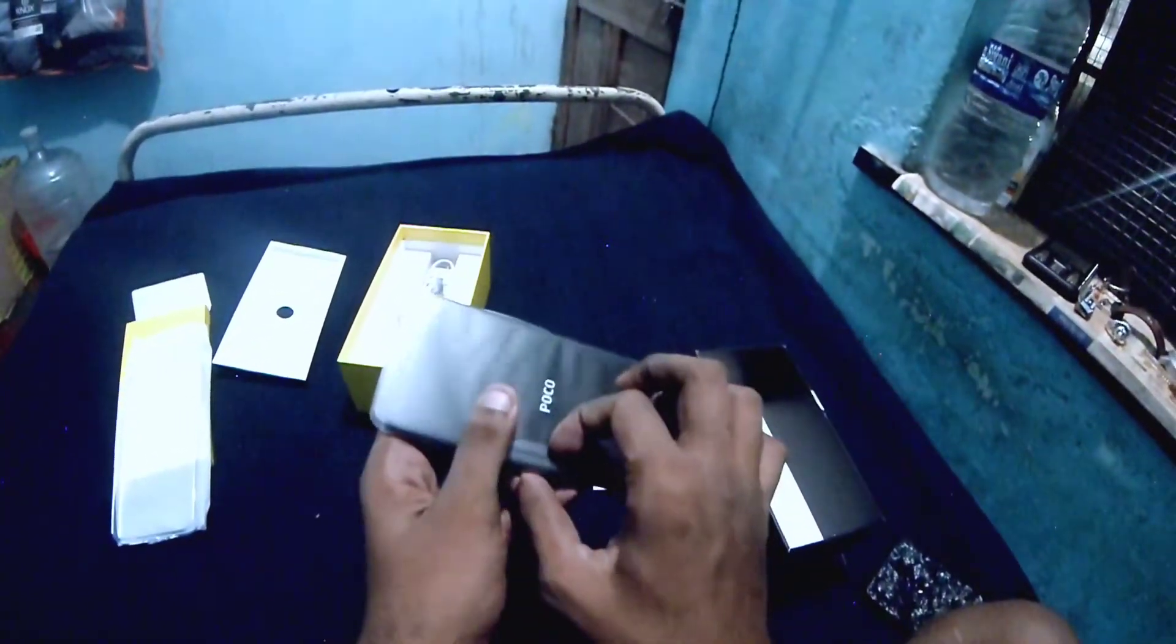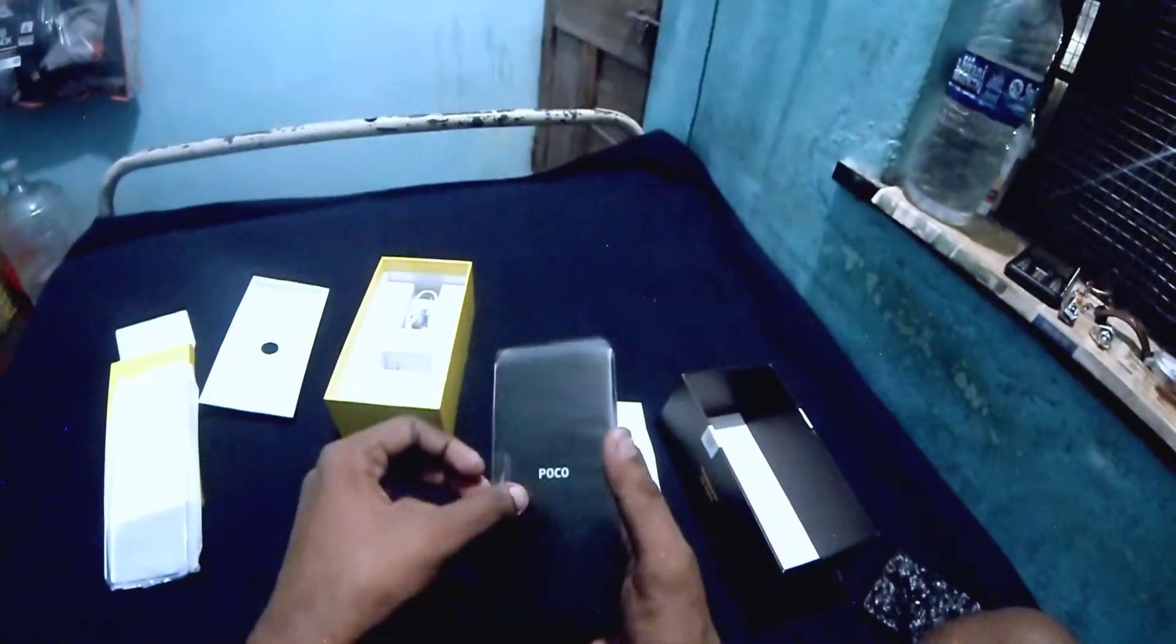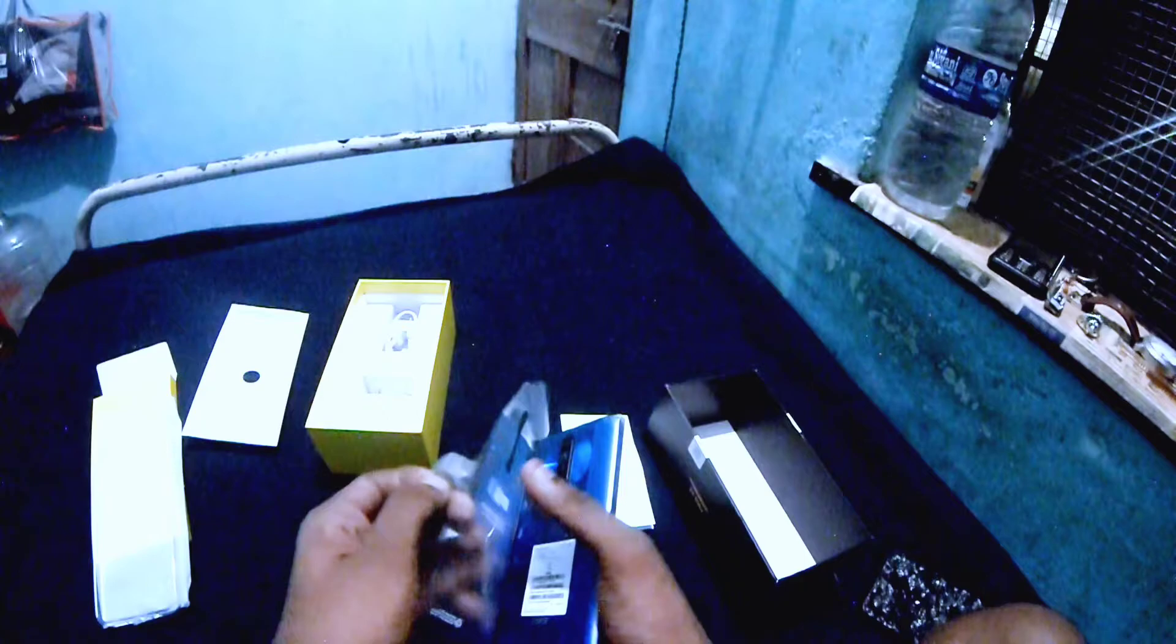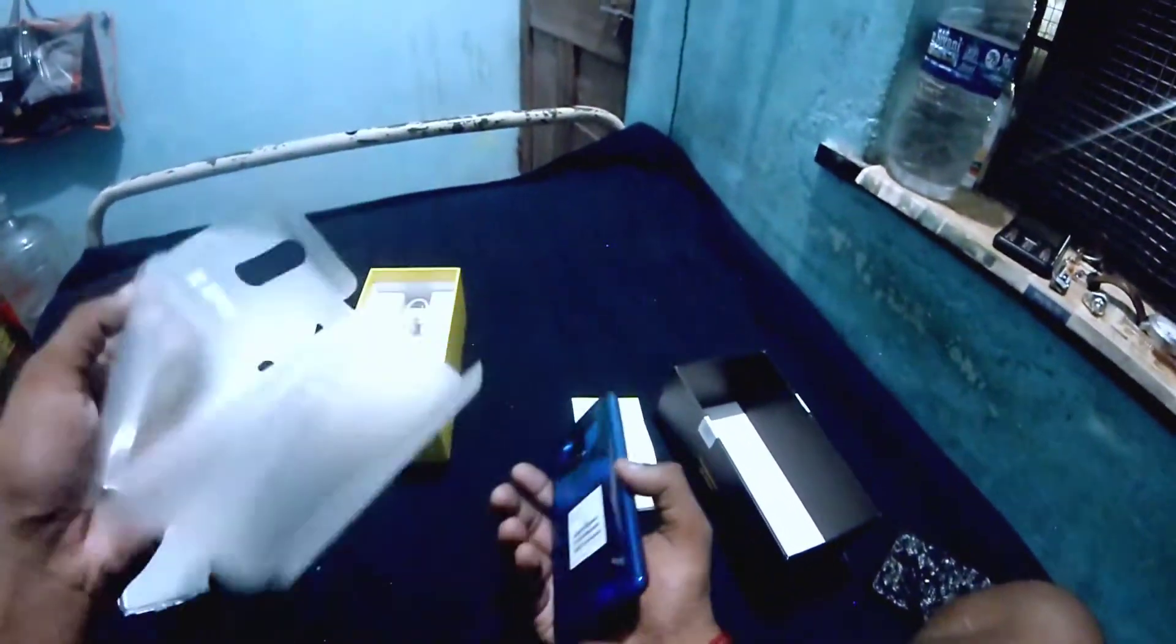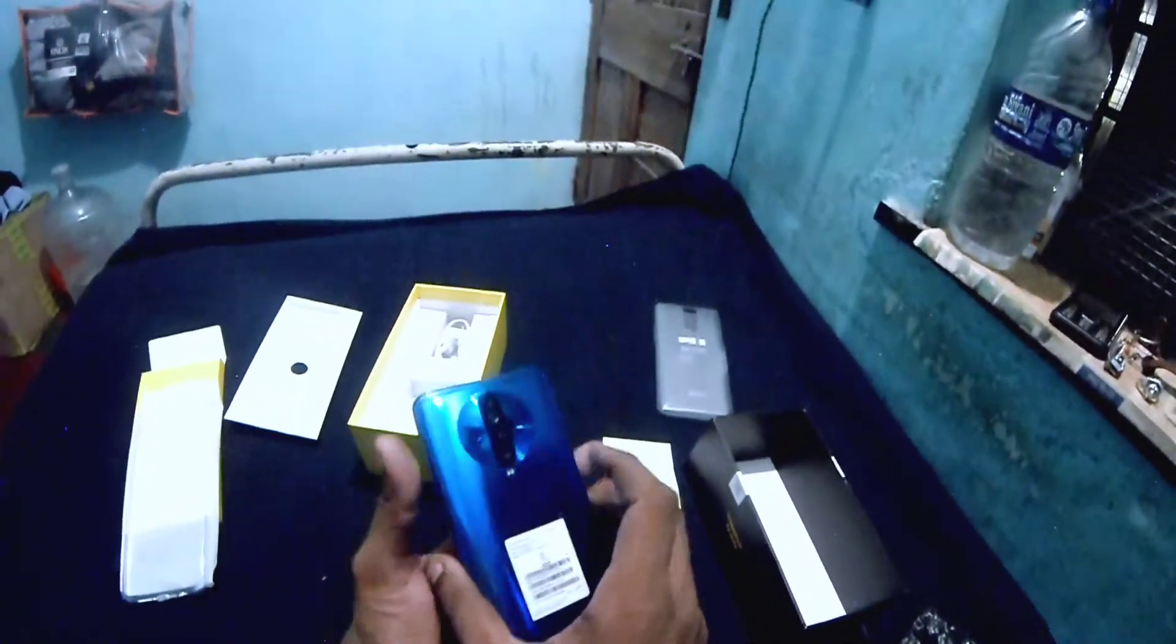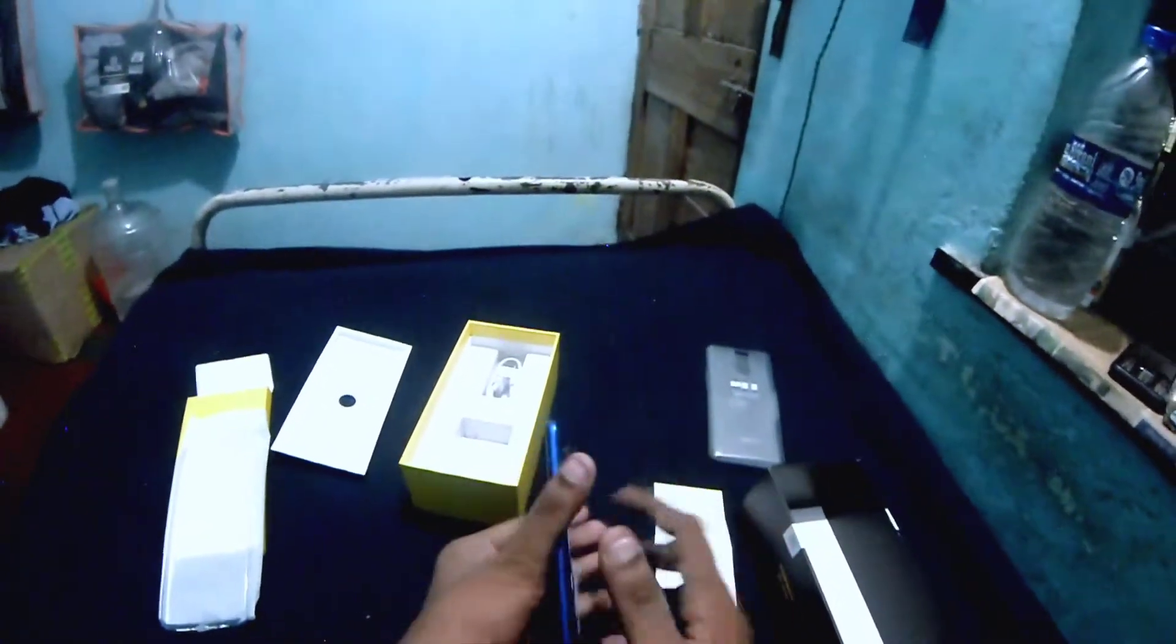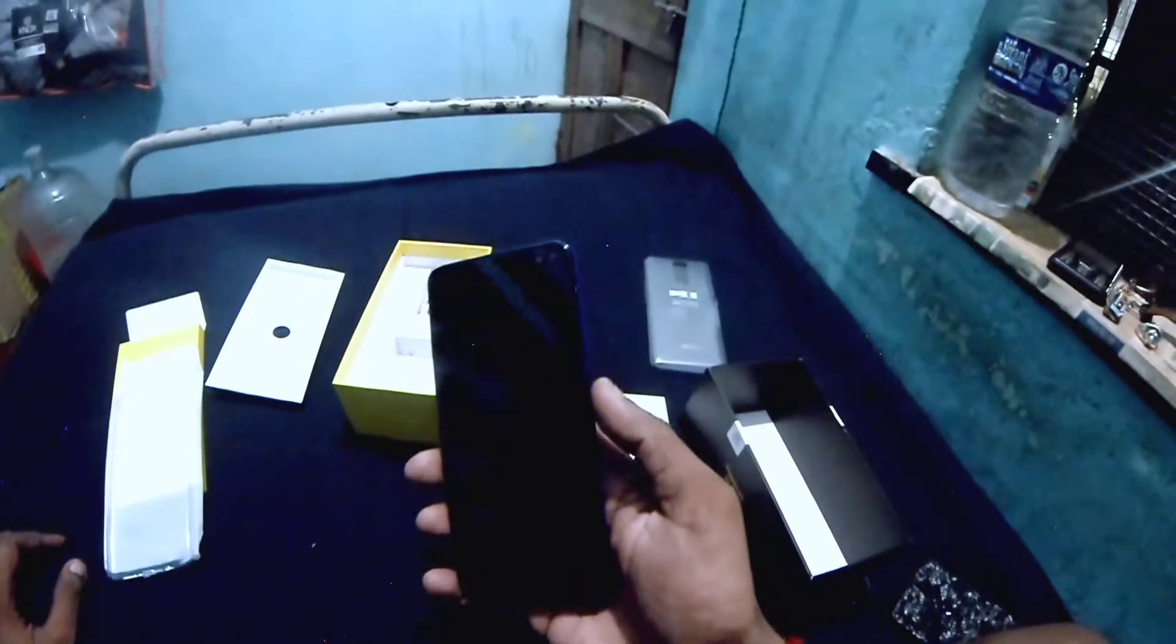So we are going to unbox all the products. That is the first thing. That is why we have to do a custom concept. The camera is a Superna camera. 64MP camera, Sony IMX sensor. This is worth buying camera and mobile.